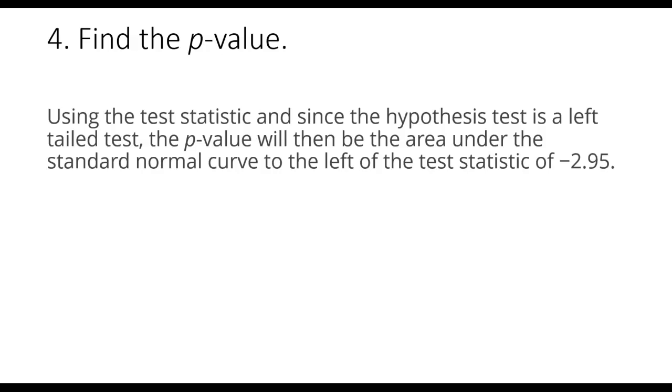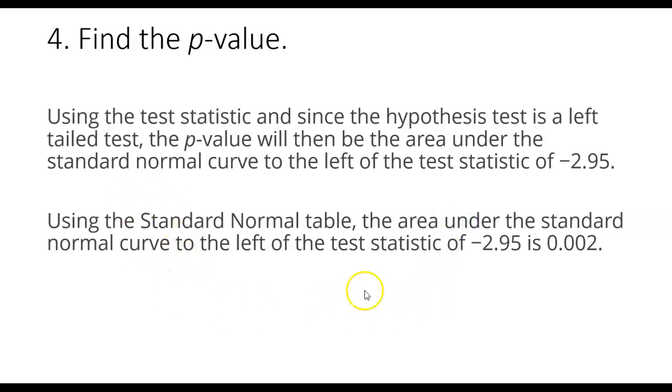I go to my table, I find the z-score, the standard normal table, and I find the value of negative 2.95. The area to the left of that test statistic is going to be 0.002, thus my p-value is given at 0.002.